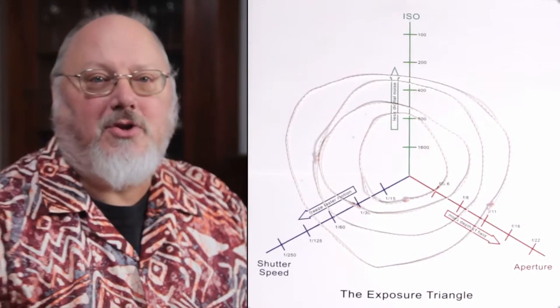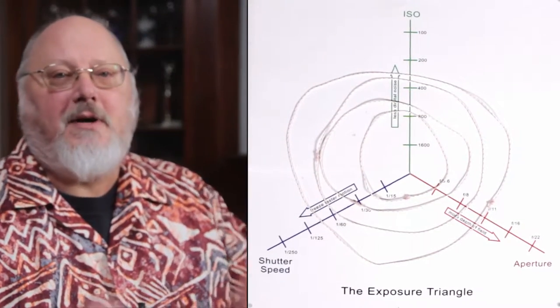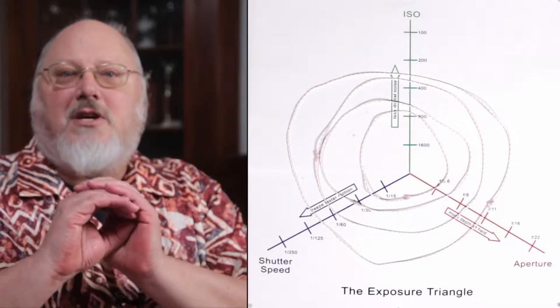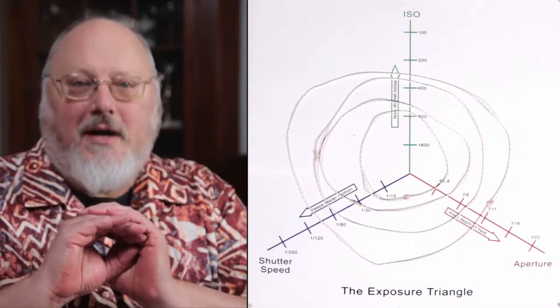And the third one is the aperture. The aperture is how big the opening is, from a very small opening to a very large opening. And obviously, the smaller the opening, the less light is coming in at a time.